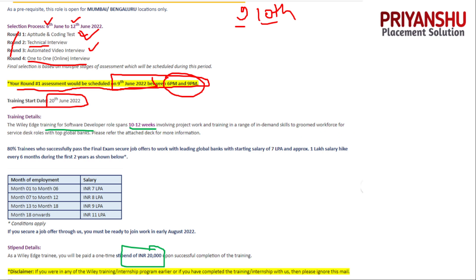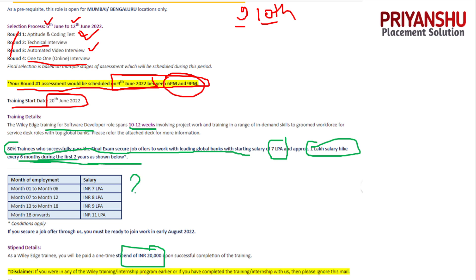You need to secure a minimum of 80 percent. Whoever successfully passes the final exam gets a job offer to work with a leading global company, with a starting salary of 7 LPA and approximately 1 LPA salary hike every six months during the first two years. So: 7, then 8, then 9, then 11 LPA. You must be ready to join as early as August 2022.